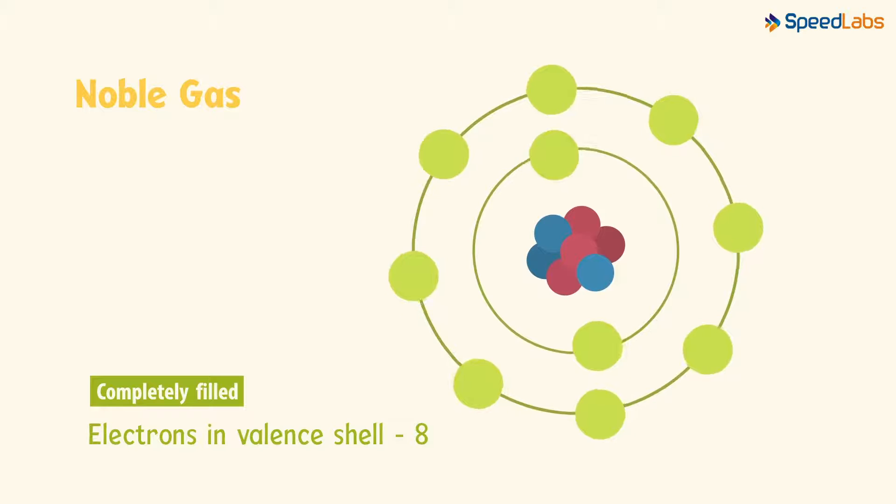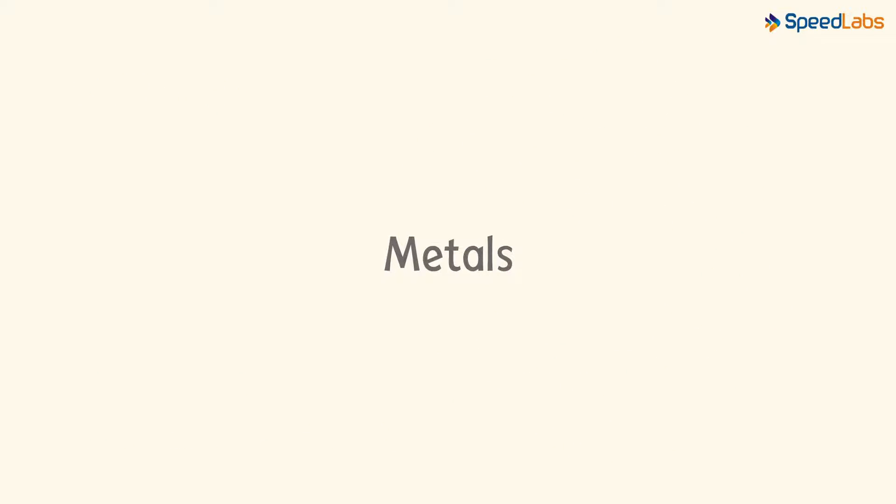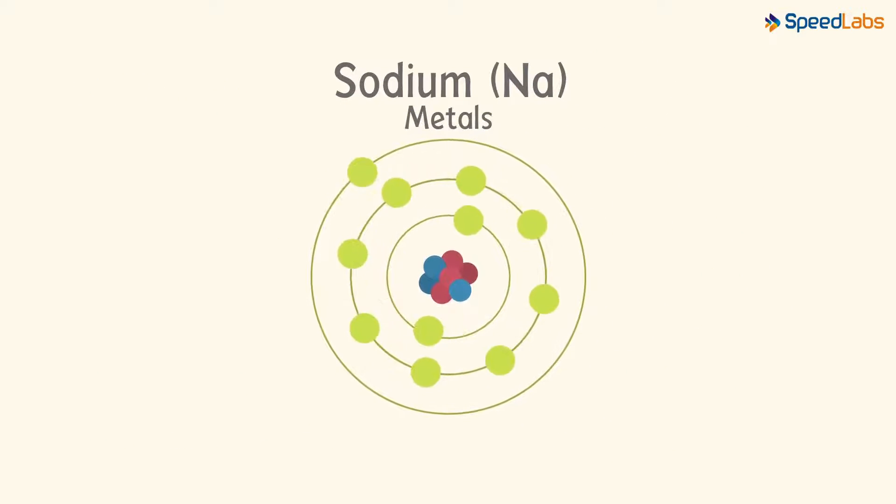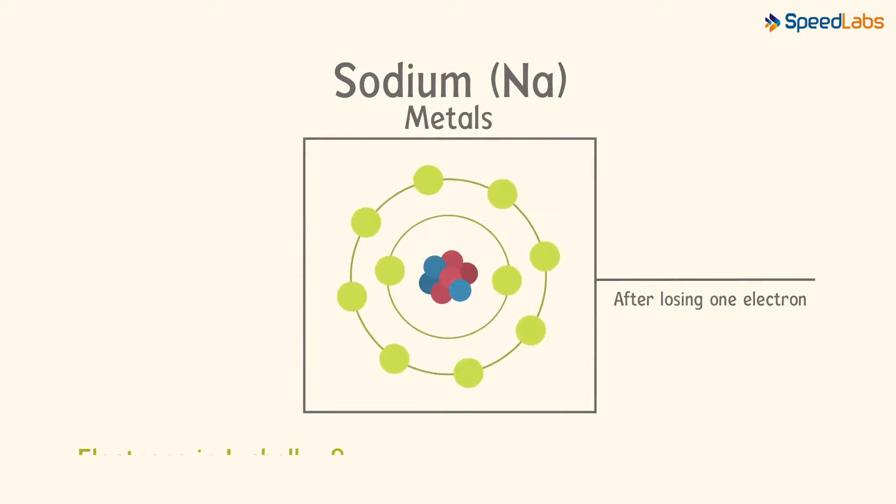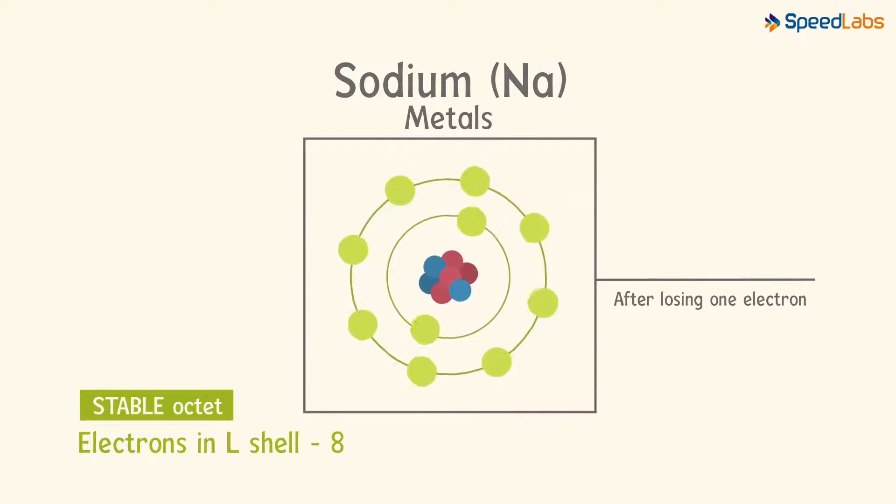Now look at the valence shells of metals. Sodium for instance, has just one electron in its outermost shell. What will it tend to do? It would want to get rid of the outermost electron. And once it loses the electron from its M-shell, then its L-shell now becomes the outermost shell which has a stable octet.